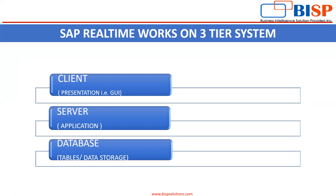SAP works on a three-tier system in real-time. The three tiers are: client, server, and database. The client is the presentation layer, or we can say the user interface, from which we can operate the software. In SAP S4 HANA, it has the Fiori Launchpad. Fiori Launchpad is a shell that hosts SAP Fiori apps — it is the entry point to SAP Fiori apps on mobile and desktop devices. You can work from anywhere as it is an app-based and URL-based interface.